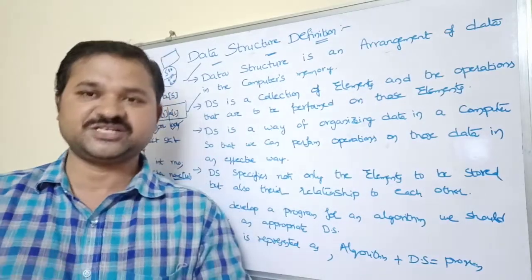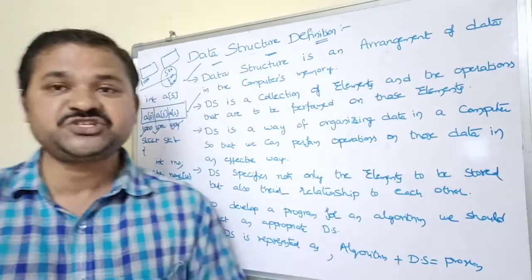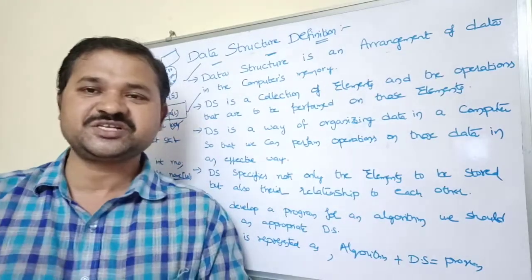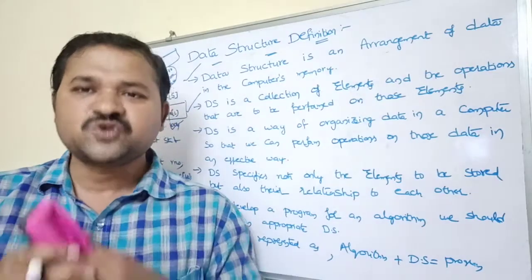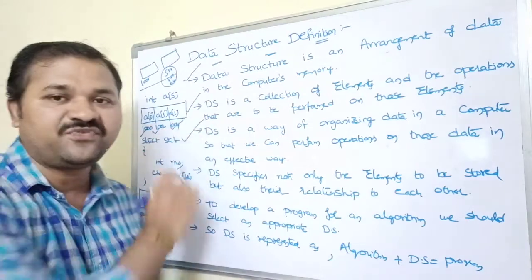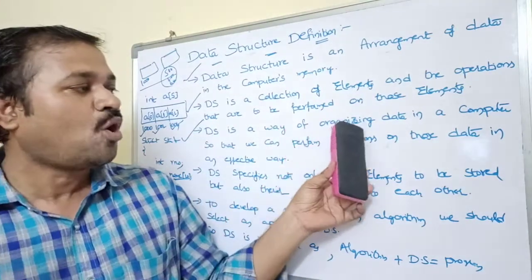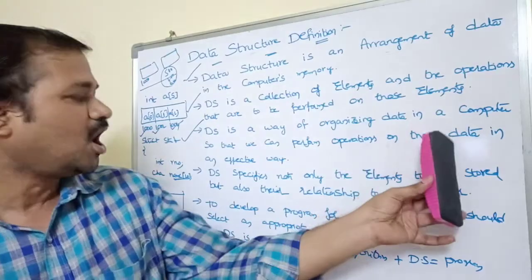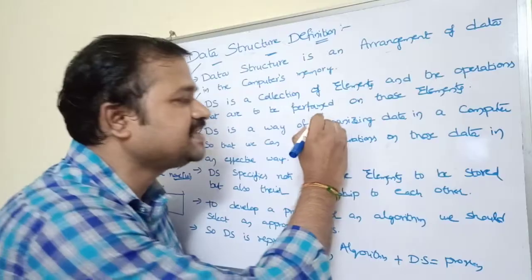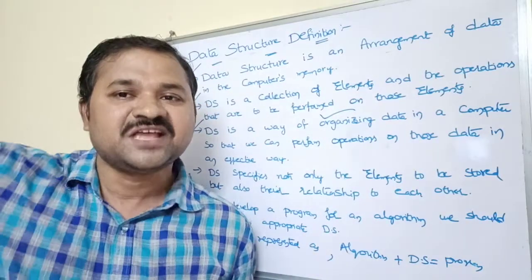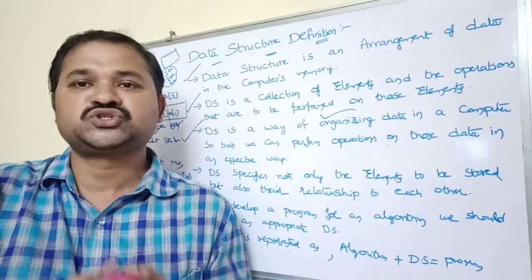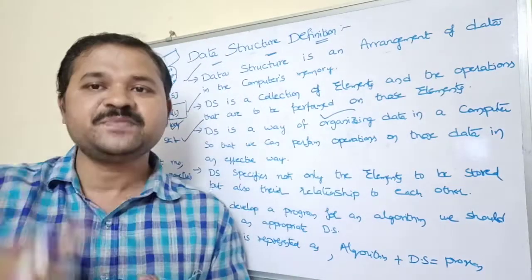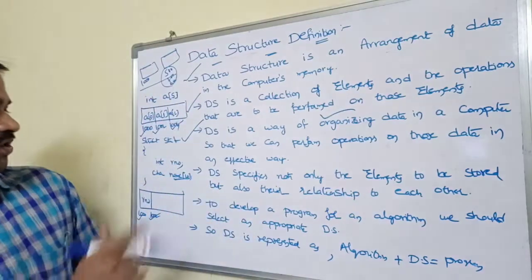Likewise, an array is a data structure on which we can perform operations like insertion at the beginning, at a specified position, or at the end, deletion, and reverse. The third definition: a data structure is a way of organizing data in a computer so that we can perform operations on that data in an effective way — that is, how we store data in memory, either in adjacent or non-adjacent locations.